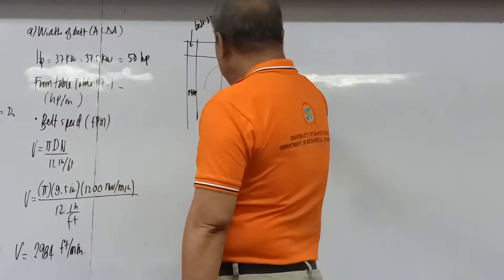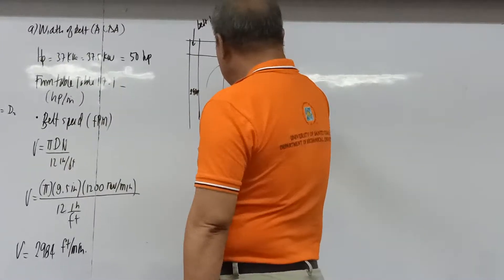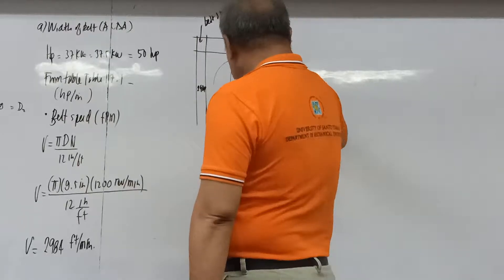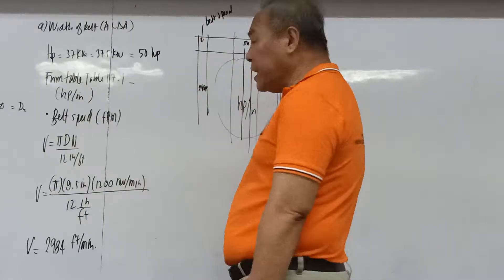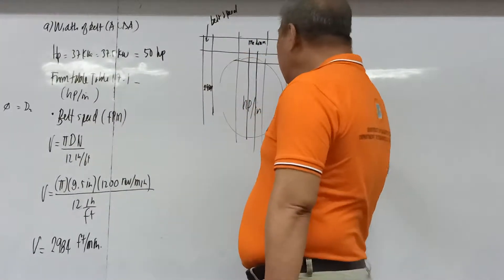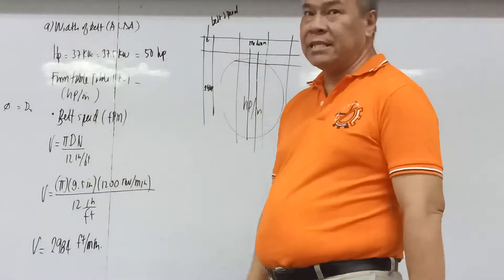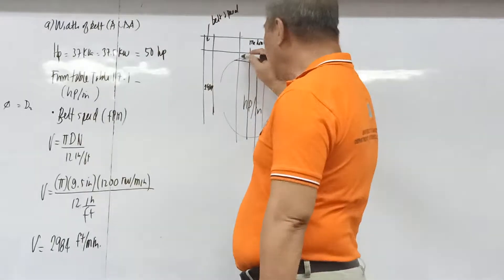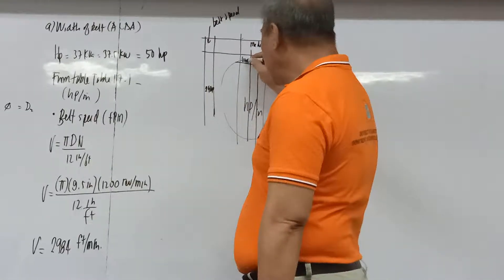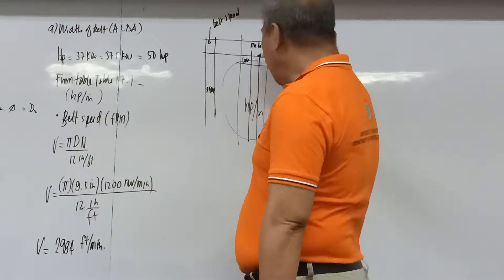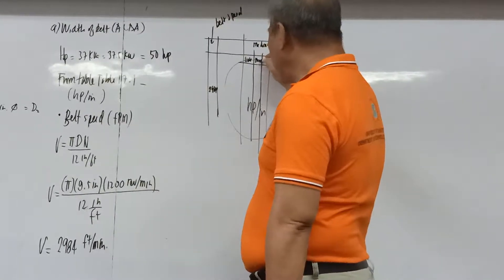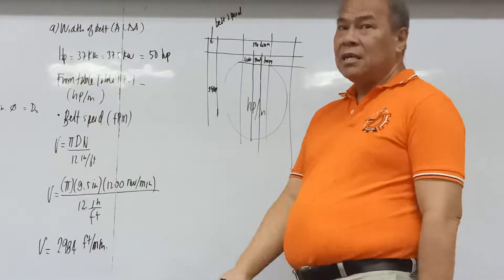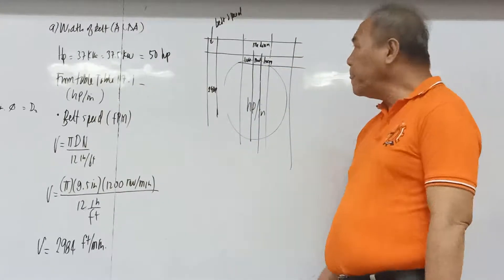So using Table 17.1, the horsepower per inch = 8.7. Now, B is the width of the belt — that is what we want to find. From Table 17.2, we determine C_M, the motor size correction factor, which is based on the type of drive used.